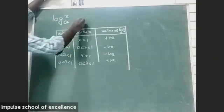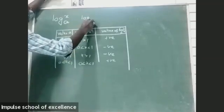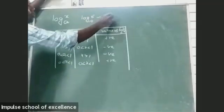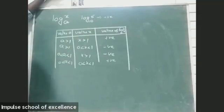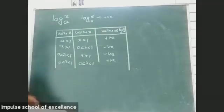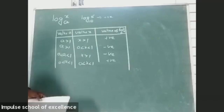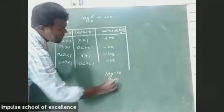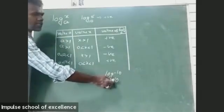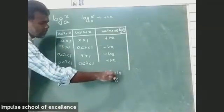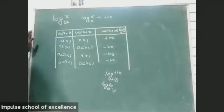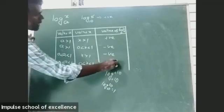Let us discuss a few examples. If you take log 10 base 5, both are positive, so the value will be positive. If we have log minus 10 base minus 10 — both are negative signs — transposing the negative signs converts them to positive, so log 10 base 10 is equal to positive 1.